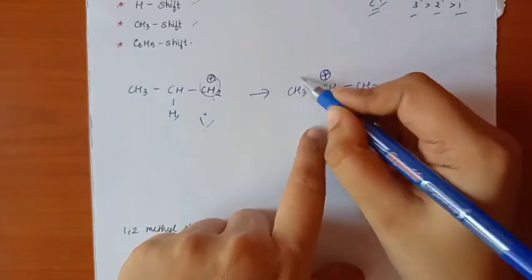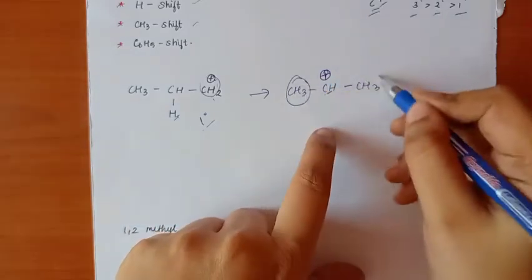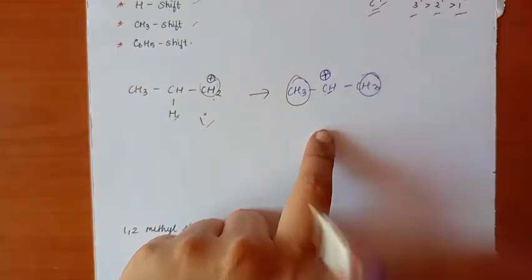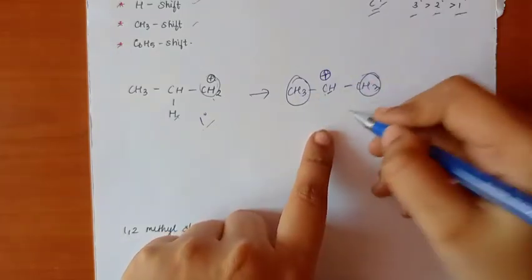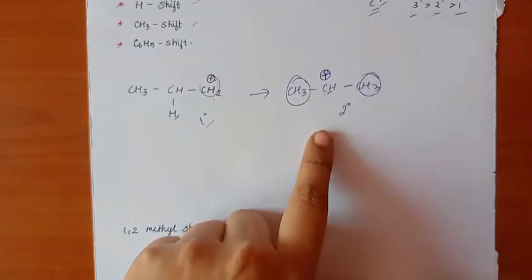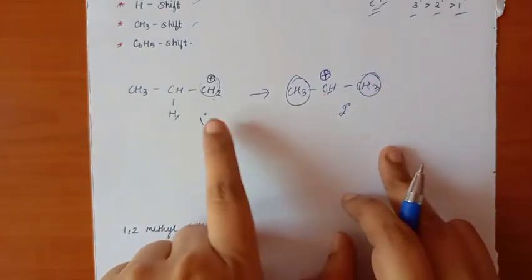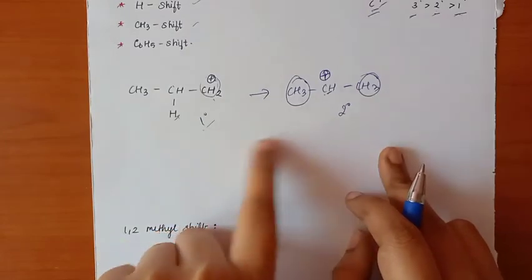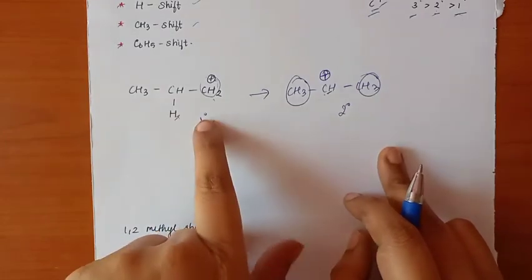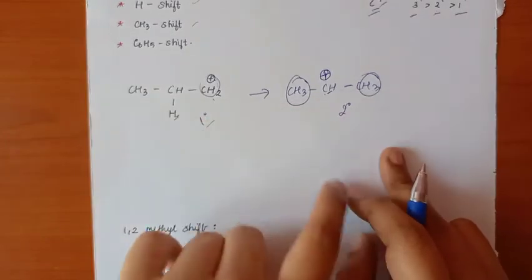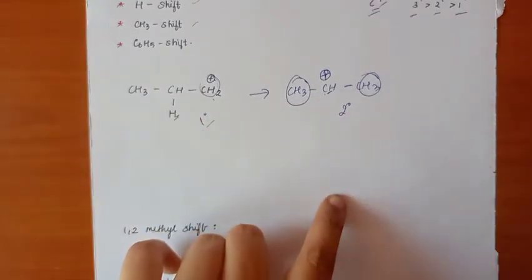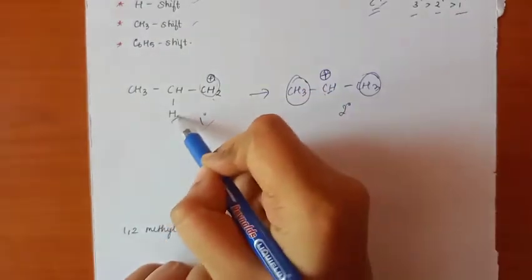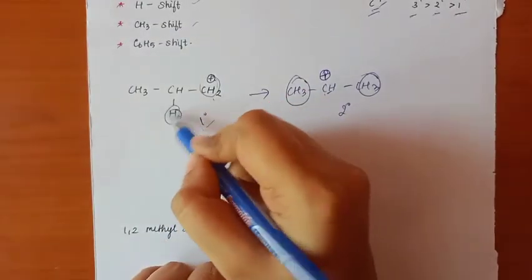Now, the positive charge is present on a different carbon. This carbon is attached to two other carbons, which means it is a 2° structure. So the less stable 1° state has been converted to the more stable 2° state. That is what we call a hydride shift — a hydrogen shift.